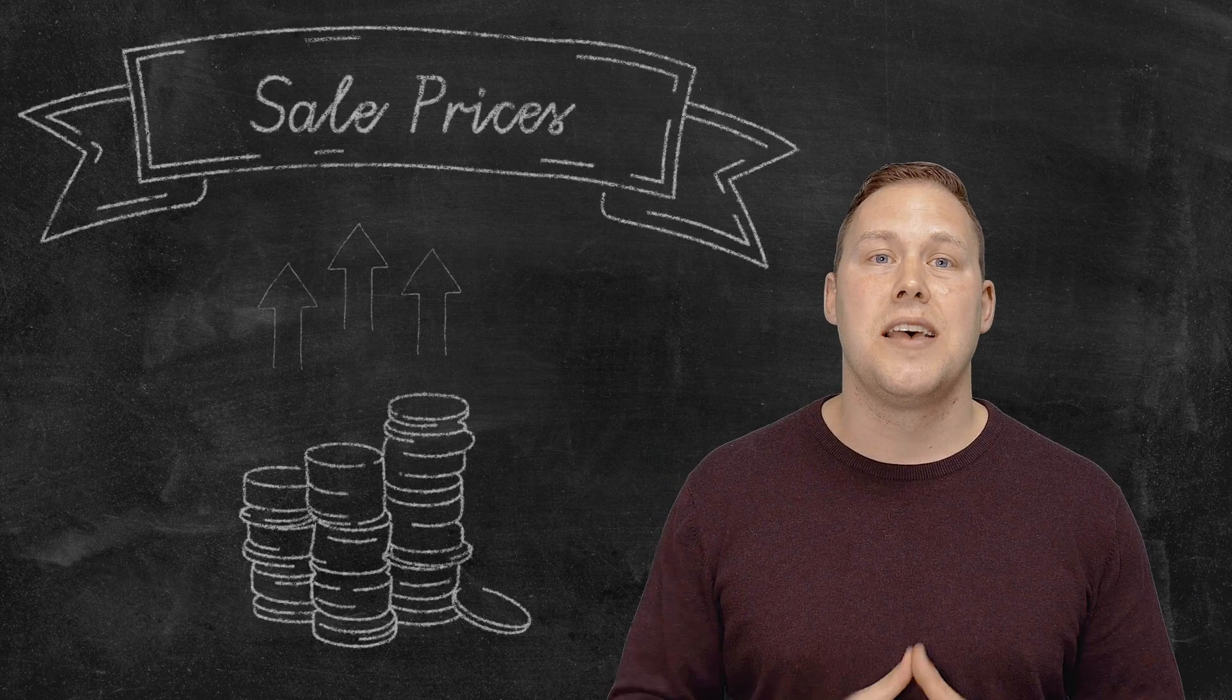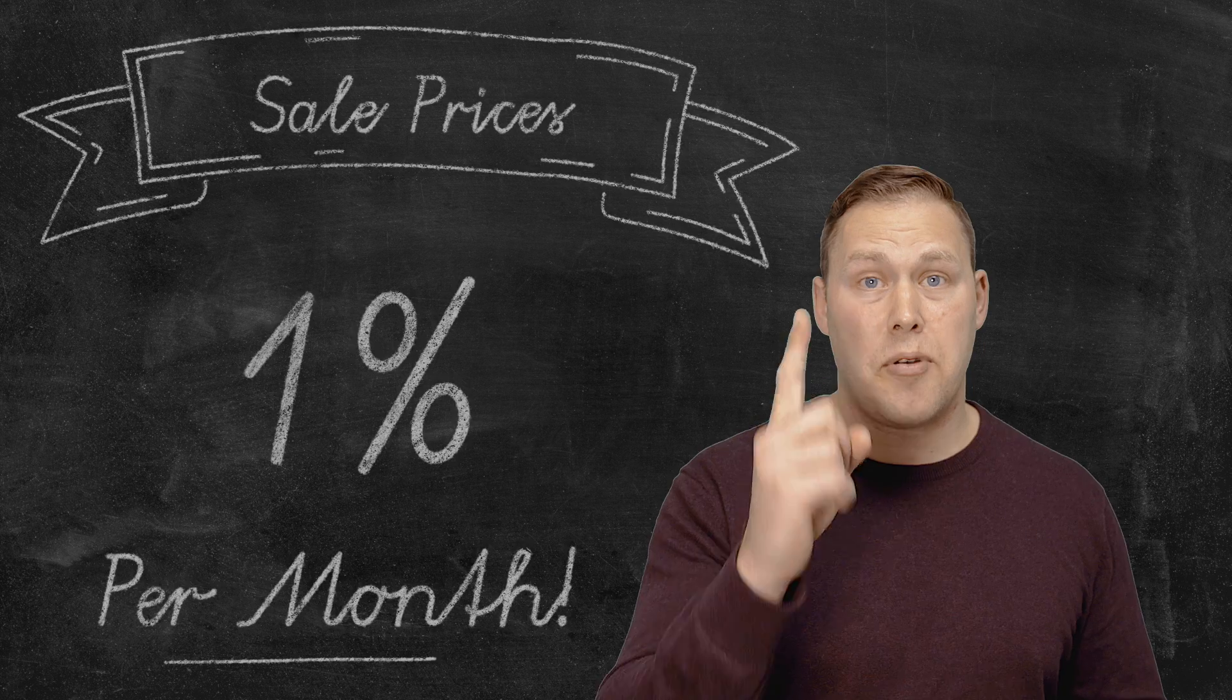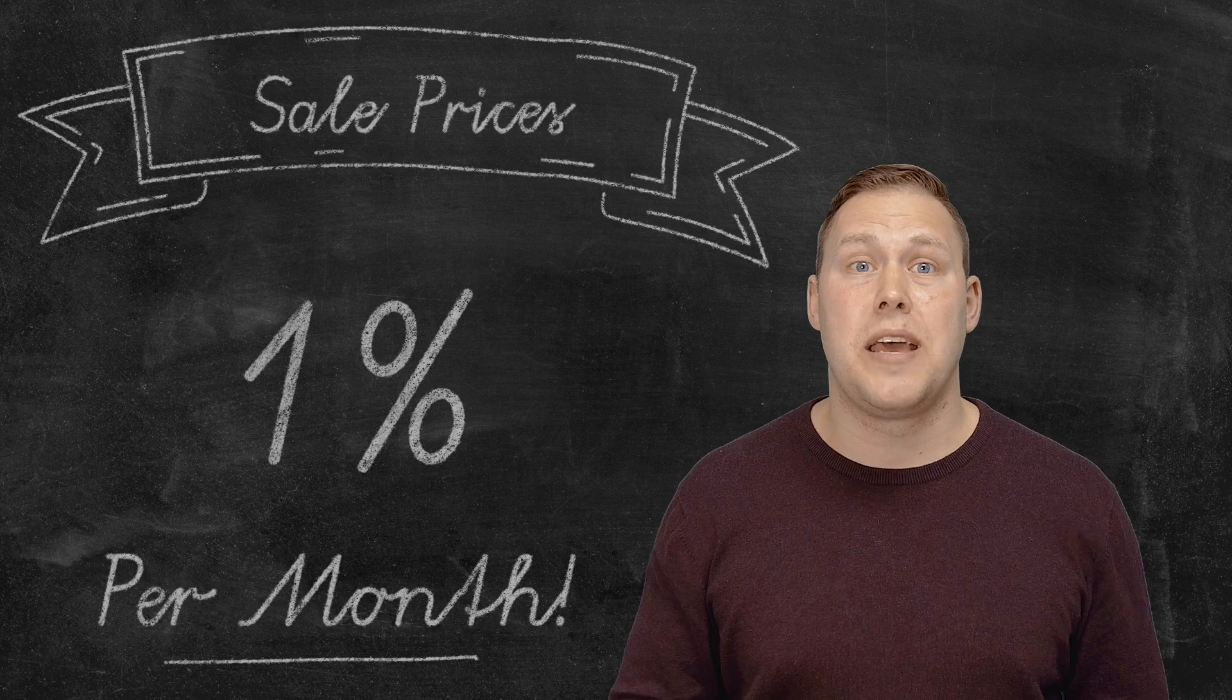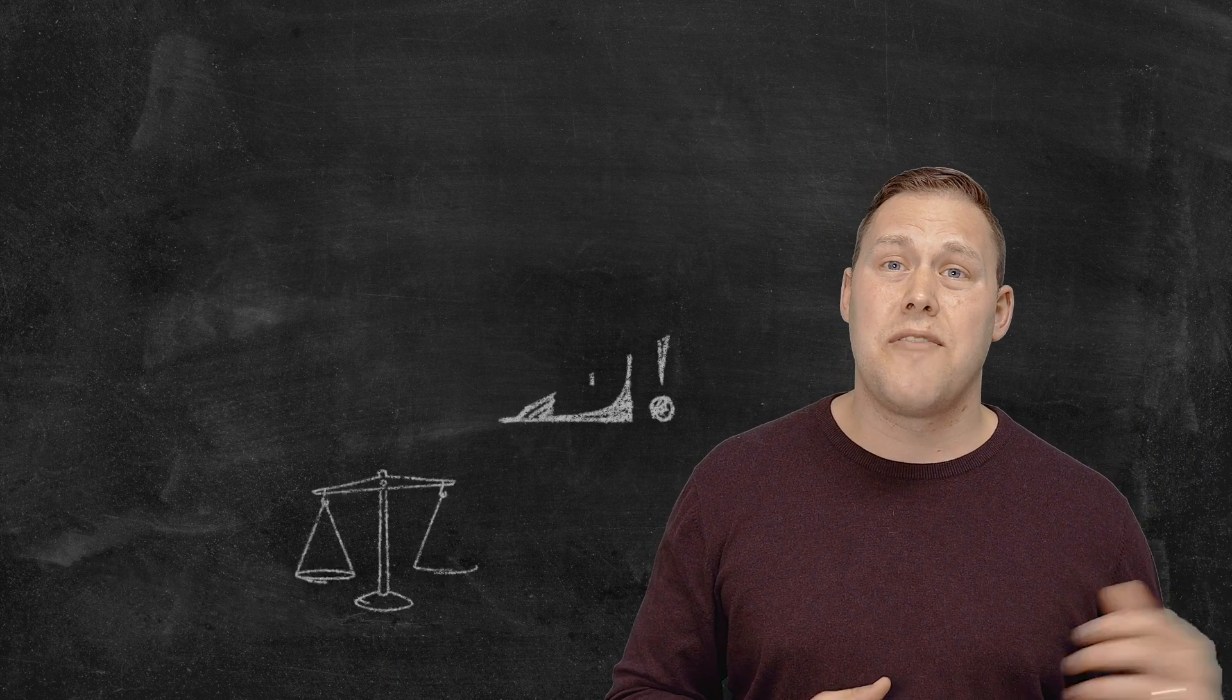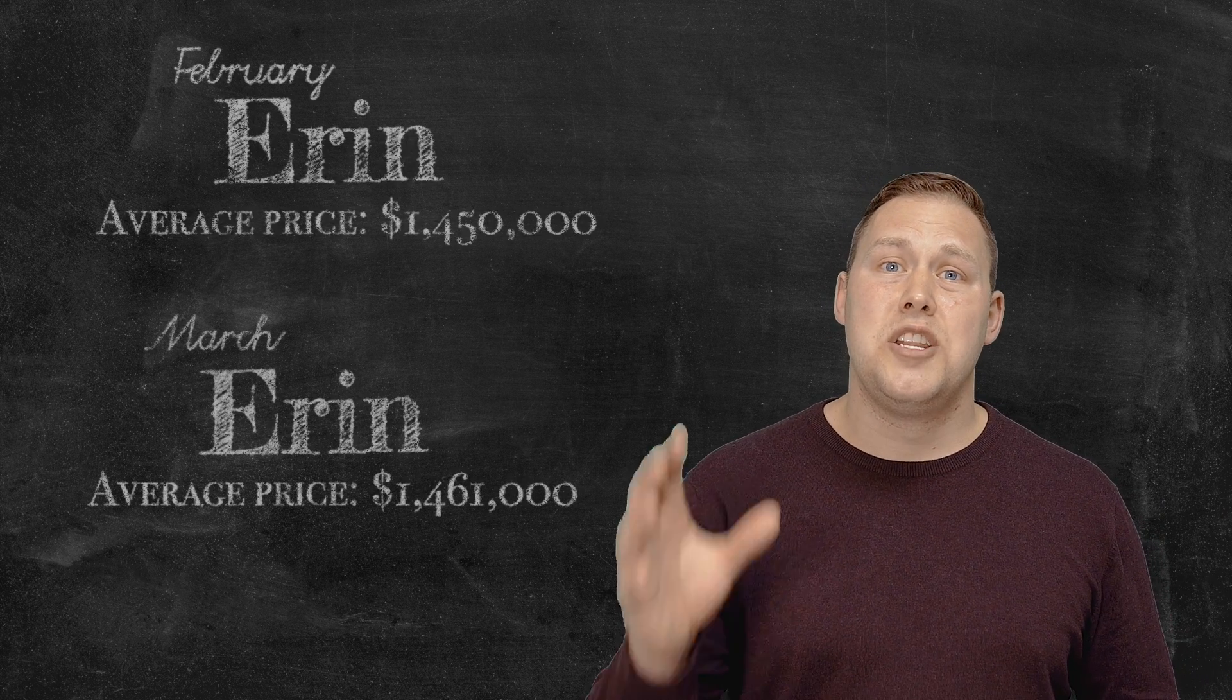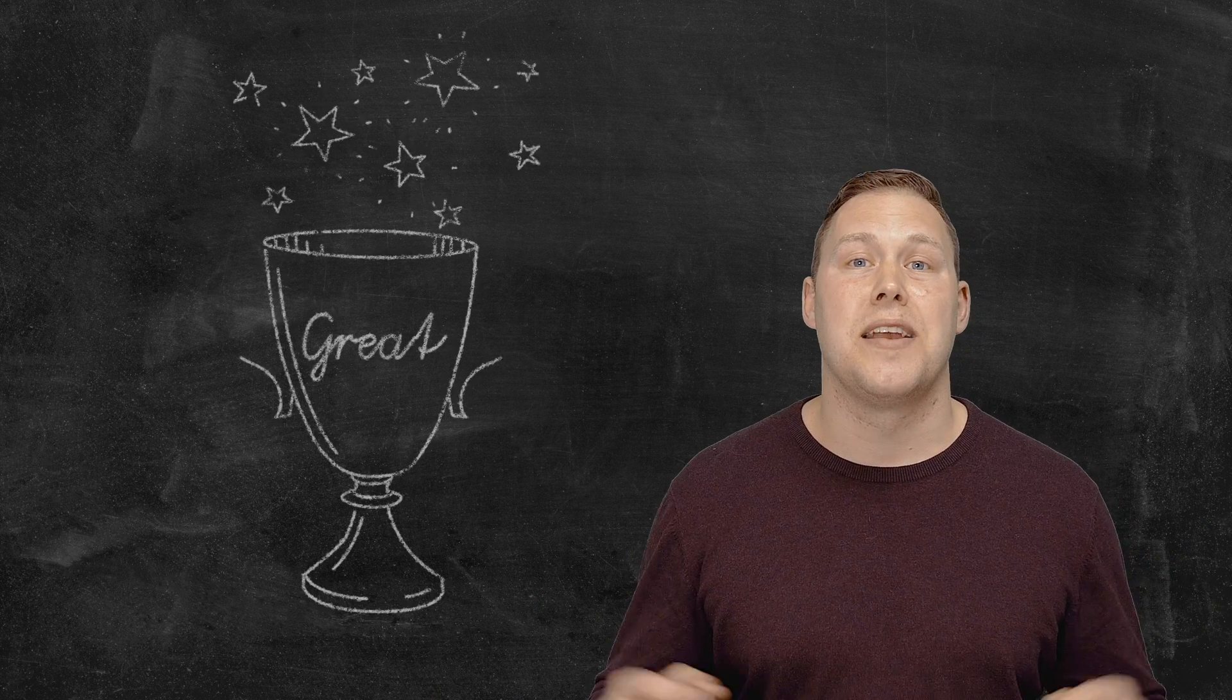And our sale prices are up 0.77%, so almost 1% per month. Normally at this time we're seeing 5% to 6% per month, but we're almost seeing 1% per month, which is huge, which means we went from an average sale price in February of $1,450,000 to March $1,461,000. It's absolutely great.